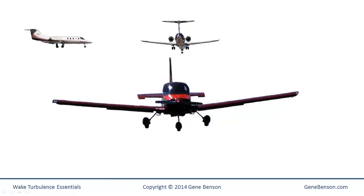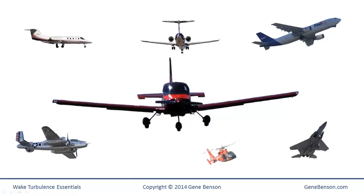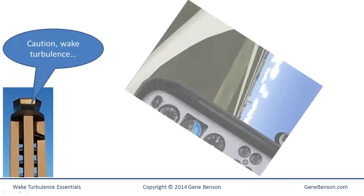This includes business aviation, regional airline class turboprops and turbojets, many classic warbirds, as well as airliners and military aircraft. Heavy helicopters also produce wake turbulence. Wake turbulence avoidance is an area in which it is easy to become complacent. We are frequently warned — caution wake turbulence — and we don't encounter any problems. But all it takes is once to have a catastrophe.